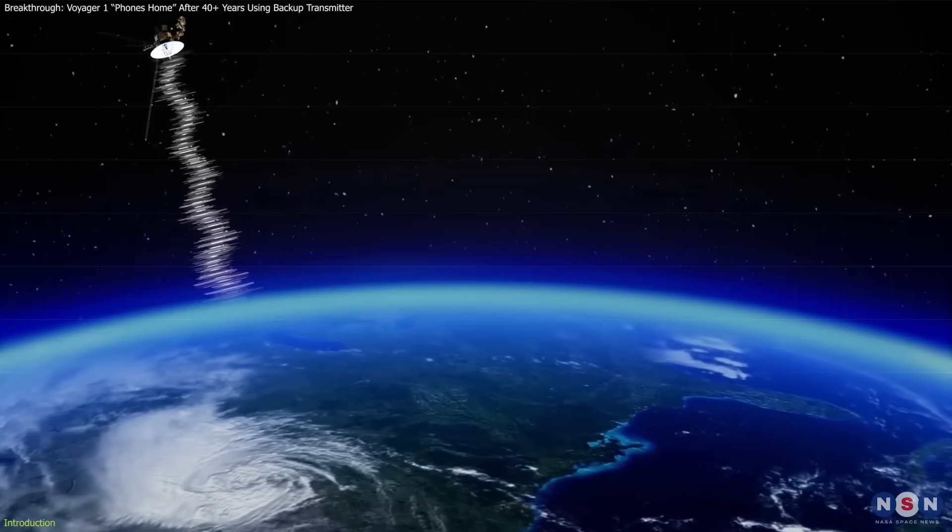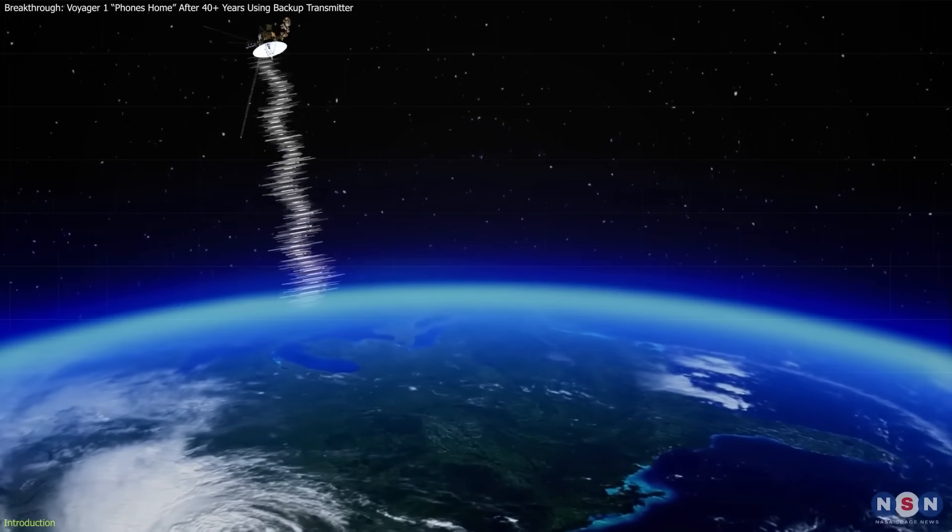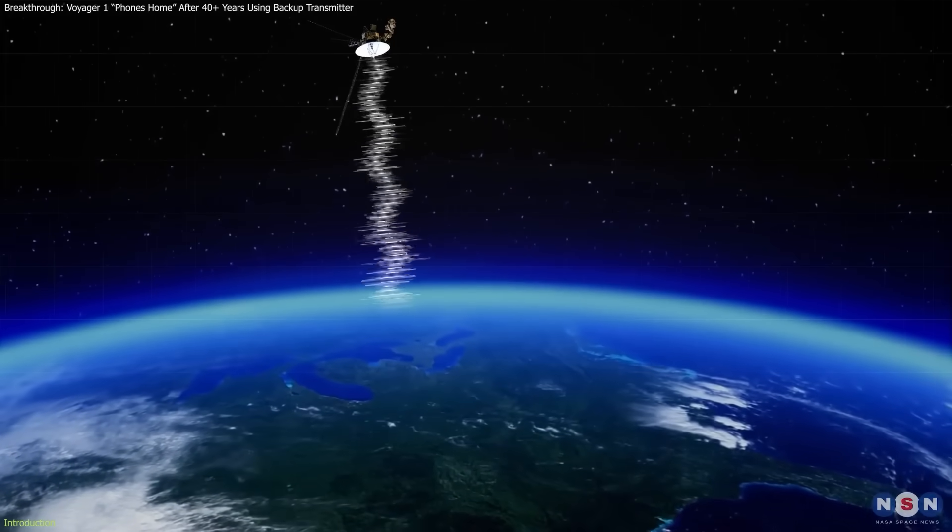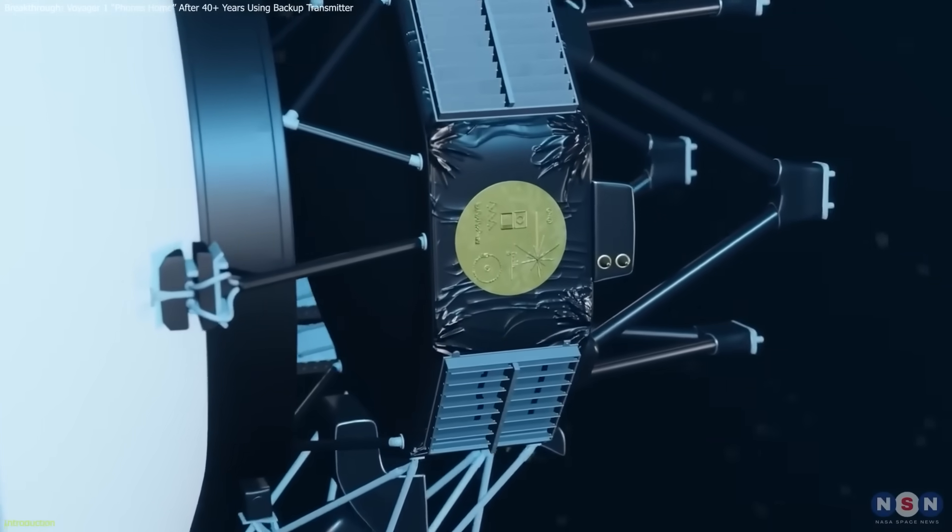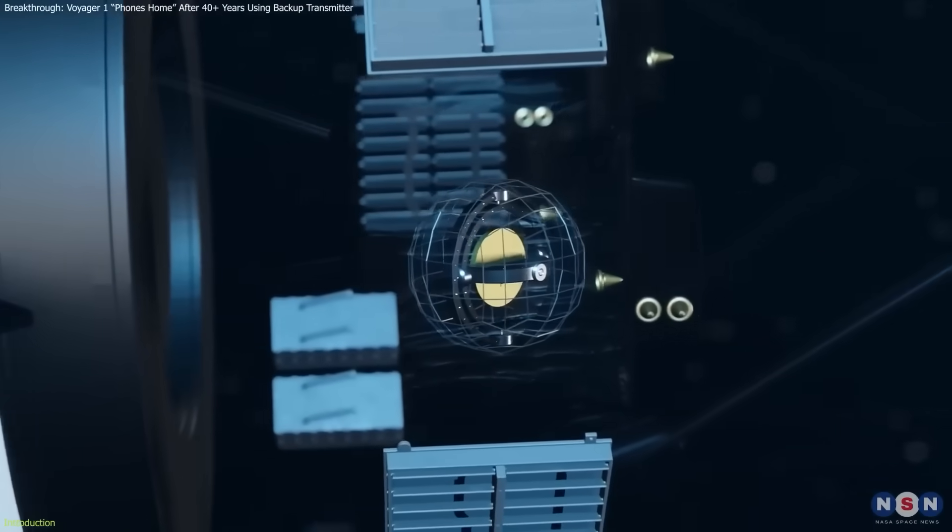Voyager 1, the most distant human-made object in existence, has just sent back data from the edge of interstellar space. Data that doesn't match anything we expected. In fact, it suggests something impossible.